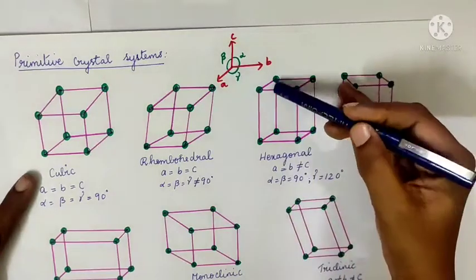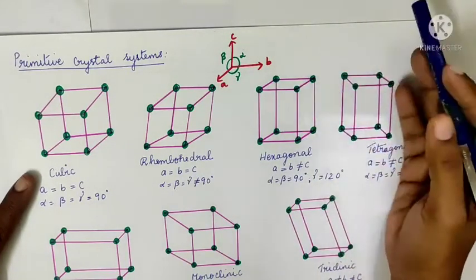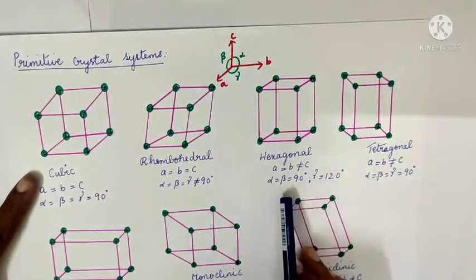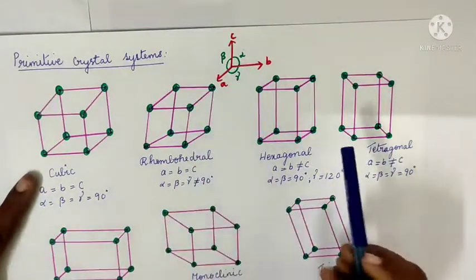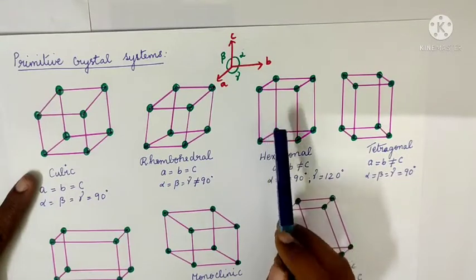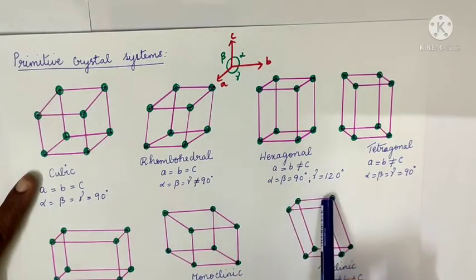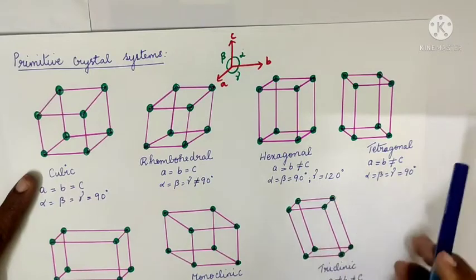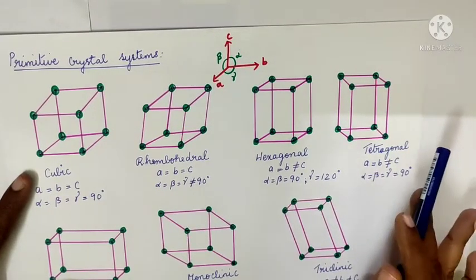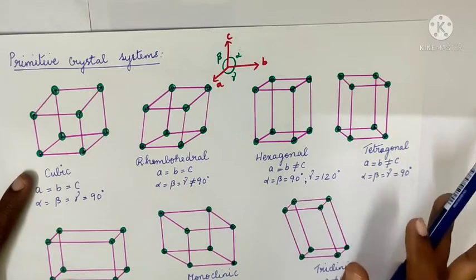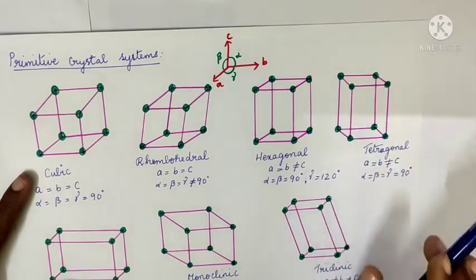For hexagonal: edge lengths a and b are the same, but c is not equal to a or b. The angles alpha and beta are 90 degrees, and gamma is 120 degrees.